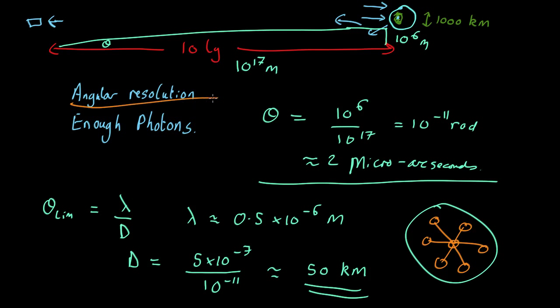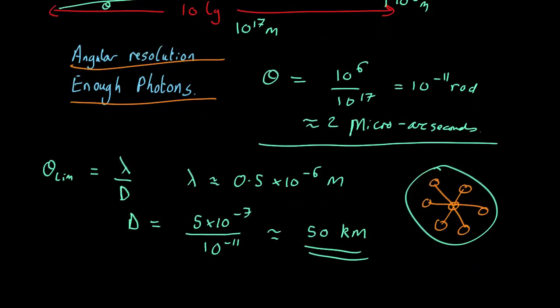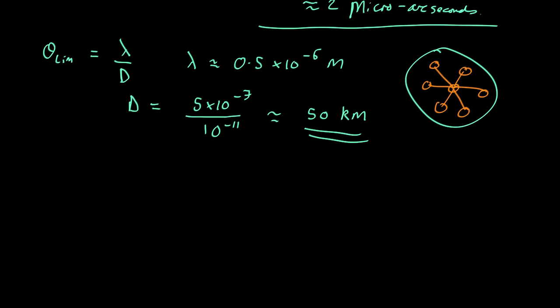So that's the angular resolution limit, but that's going to do us no good if we're not picking up enough photons. So how many photons are we going to pick up? So you've got a continent.